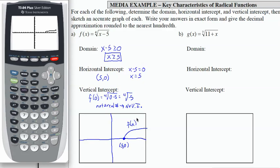Let's see what happens then for g of x. g of x is the seventh root of 11 plus x. In this case, because I have an odd root, my domain is all real numbers, which I can write as this r, or I can say all real numbers.